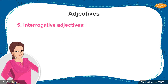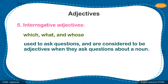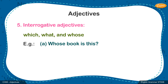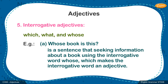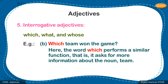Finally, we come to interrogative adjectives. These adjectives are which, what, and whose. They are used to ask questions and are considered adjectives when they are used to ask questions about a noun. 'Whose book is this?' is a sentence requesting information about a book using the interrogative word 'whose,' which makes the interrogative word an adjective. In the sentence 'Which team won the game?' the word 'which' performs a similar function — it asks for more information about the noun 'team.'